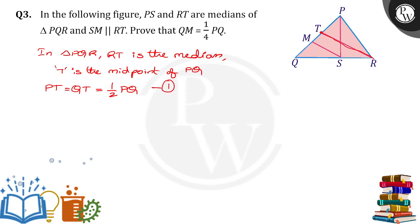Next, TS is the median drawn to QR. So what will happen? S is the midpoint of QR.